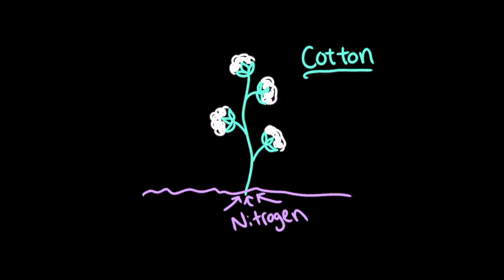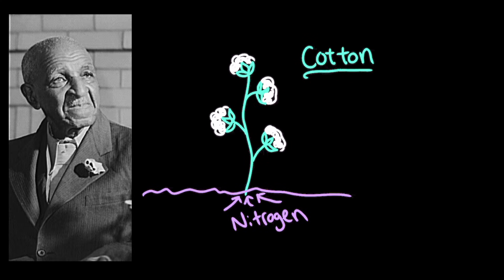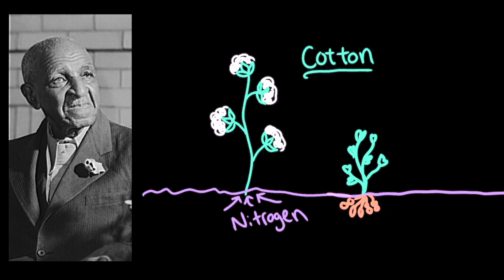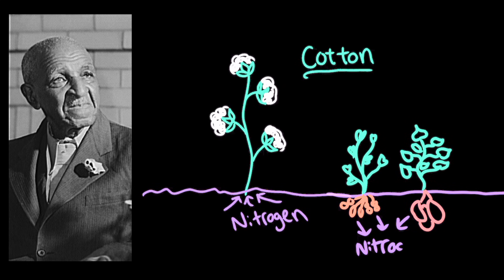In the early 20th century, agricultural scientist and inventor George Washington Carver suggested that farmers could alternate between growing cotton and growing nitrogen-fixing plants, like peanuts or sweet potatoes. This is a more sustainable way of farming, as the nitrogen-fixing plants would replace the nitrogen that the cotton plants took out of the soil.